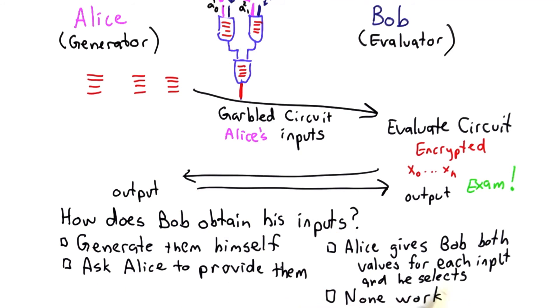So here are the choices. Bob could generate them himself. He could ask Alice to provide his inputs. He could ask Alice for both possible values for all of these wire labels, and then select the right one corresponding to his inputs. Or none of these possibilities actually work.